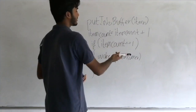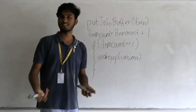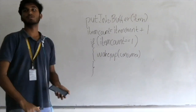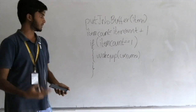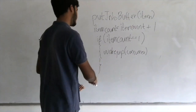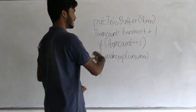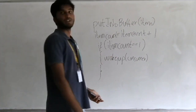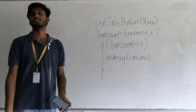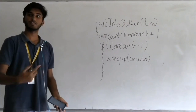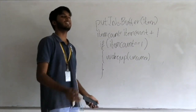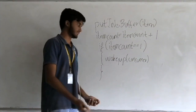Item count equals item count plus one — when the producer produces an item, the item count inside the buffer increases by one. Then there's an if-block: if item count equals one, meaning there is an item in the buffer, the producer wakes up the consumer so the consumer can consume that item.